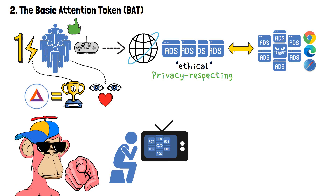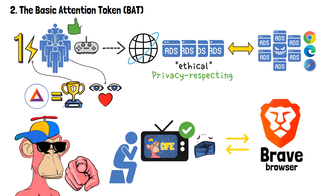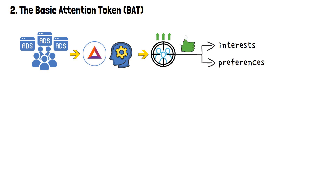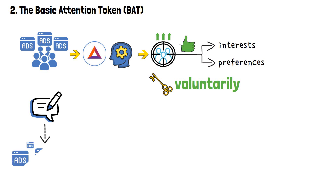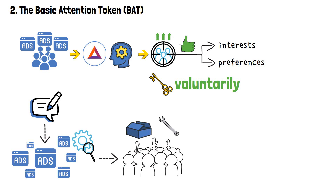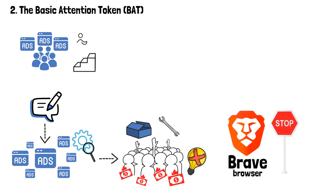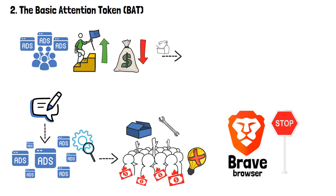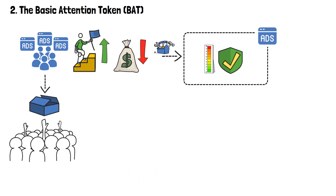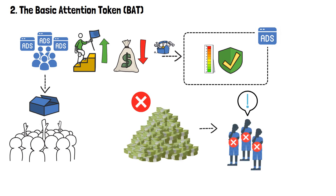You probably had to watch an ad before this video as well, and if you did, you most definitely didn't receive any reward for doing so. The game is different on the Brave Browser. For advertisers, BAT introduces a paradigm shift. Advertisers can target users more effectively, as user interests and preferences are voluntarily shared — the key word being voluntarily. This means advertisers can achieve better results with fewer resources, advertising their products only to those who are interested. No more extra costs to get the attention of those who don't care.